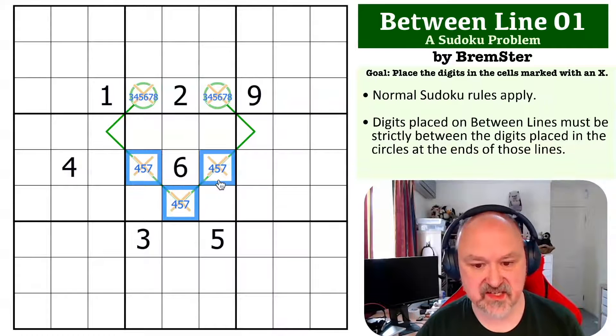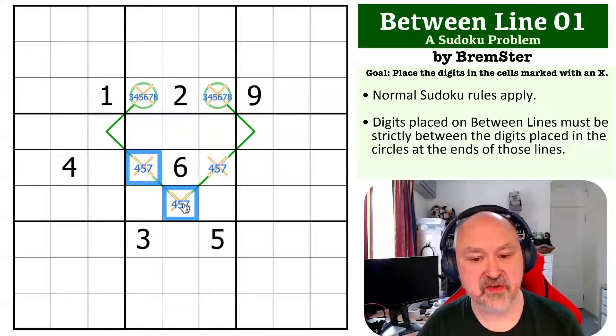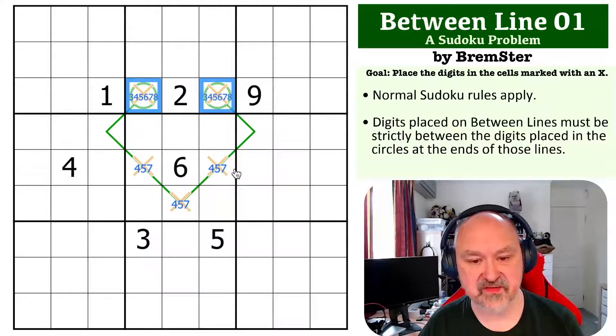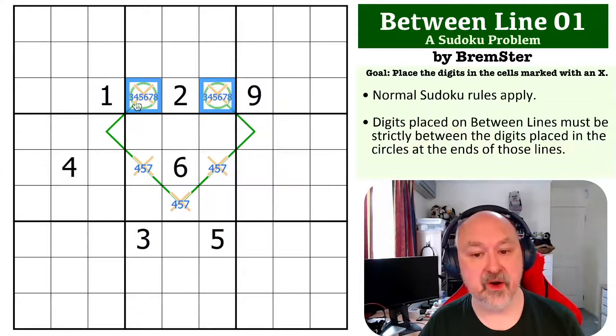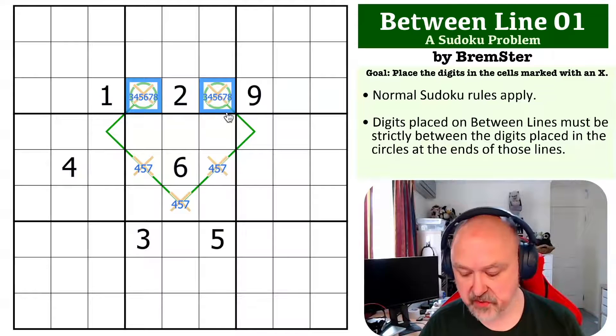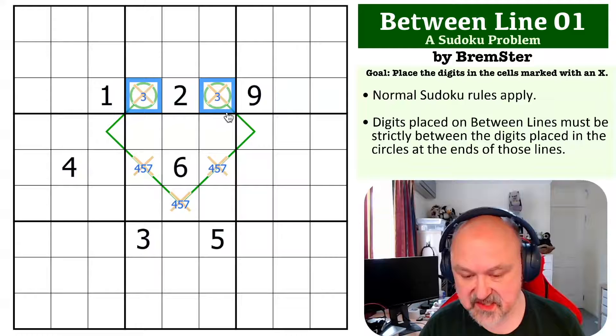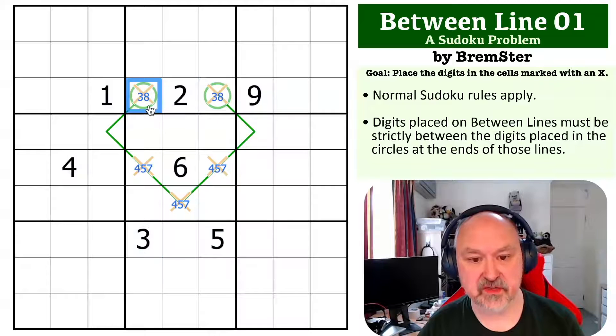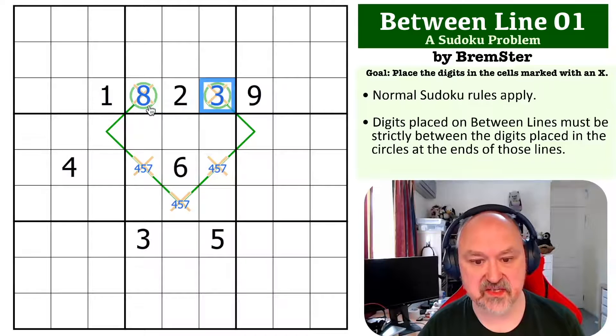However, there's no six here because of the six in the middle. So these are four, five, and seven. So one of these has to be lower than four, five, seven, which from the available options is only three. And one of them has to be higher than four, five, seven, which from the available options is only eight. So this means that this is a three, eight pair. And this three means that this is the eight and this is the three.